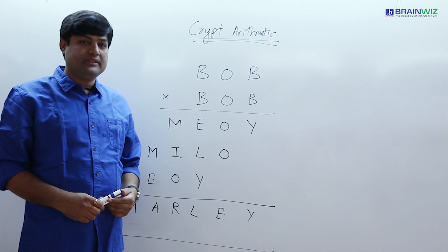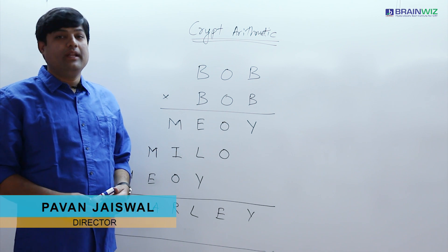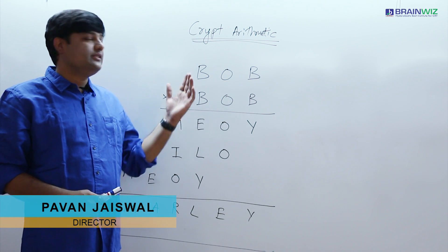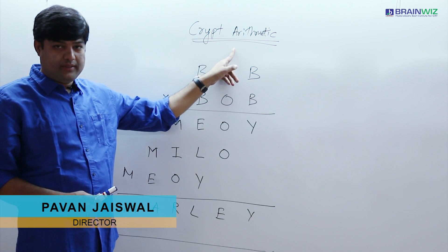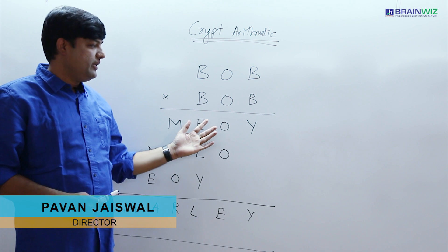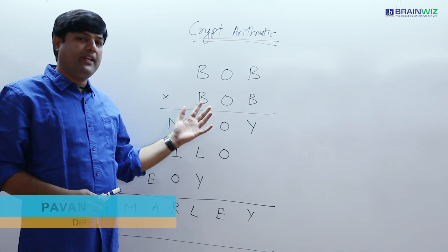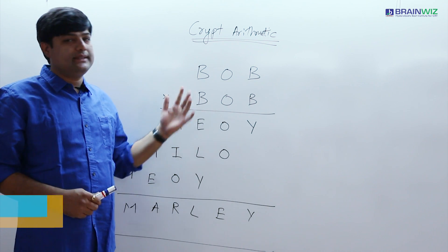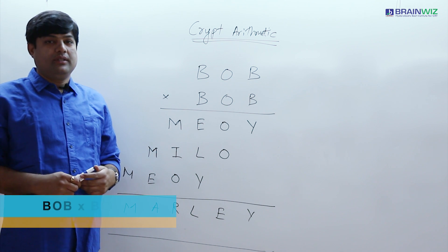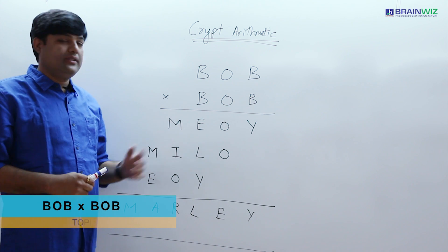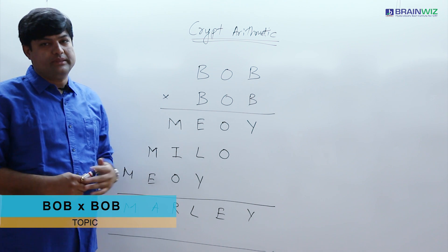Hello students, I am Pawan Jaiswal from BrainVis. Now you are going to see a question from Crypt Arithmetic based on multiplication. This multiplication is important for E-Litmus preparation. This question was given in E-Litmus.